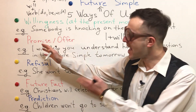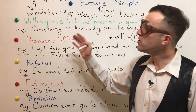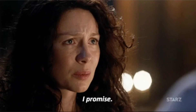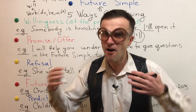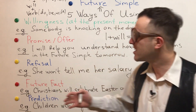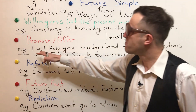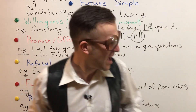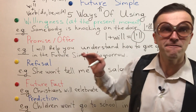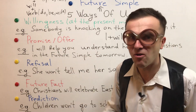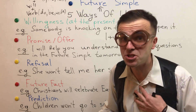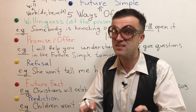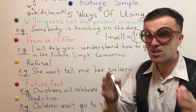The next way of using the Future Simple is promise or offer — when you promise or offer something, when you are ready to do something. For example: 'I will help you understand how to give questions in the Future Simple tomorrow.' So I promise you or I offer you. Did you understand that?